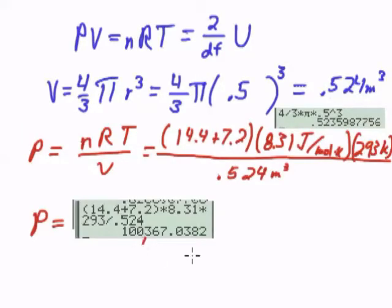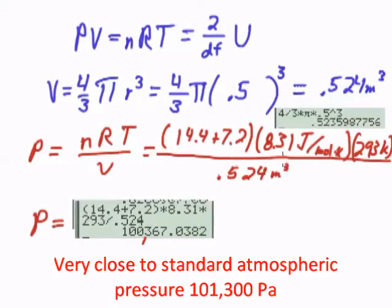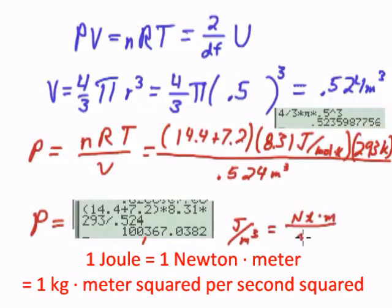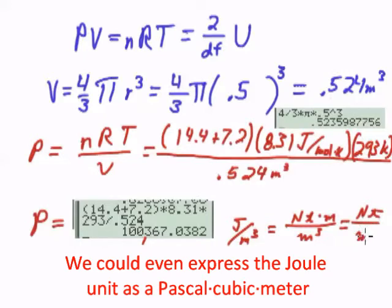And that comes out to be 100,367. And what cancels out, you get the joules per meter cubed. A joule is equal to a newton meter per meter cubed. So that is a newton per meter squared.